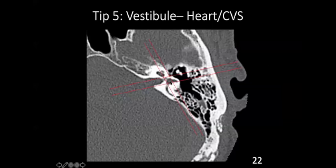Coming to the vestibule — remember, the vestibule is the heart of the inner ear. Going either anterior to posterior or lateral to medial, it is in the middle. Just as a heart is central to the cardiovascular system, the inner ear structures are oriented similarly: the cochlea is anterior, the semicircular canals are posterior, and the vestibule is in the middle. This is how inner ear structures are oriented.